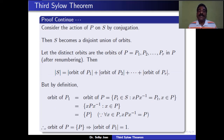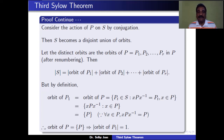Consider the action of P on S by conjugation. Then S becomes the union of disjoint orbits. Let these disjoint orbits be represented by the Sylow P-subgroups P1, P2, ..., Pr in P — this is after renumbering. Since S is the union of these disjoint orbits, the number of elements in S equals the sum of the number of elements in each orbit.